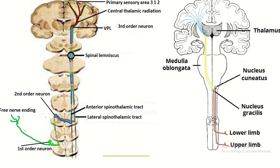Now the summary of all three tracts. This is the free nerve ending, this is the peripheral process of the pseudo-unipolar neuron, this is the central process. The central process synapses with the neuron present within the substantia gelatinosa. The axon of the neuron of the substantia gelatinosa crosses the side and goes to the opposite side. One group of axons ascends in front of the ventral horn of the spinal cord and another group ascends just lateral to the ventral horn — both forming the spinal lemniscus.